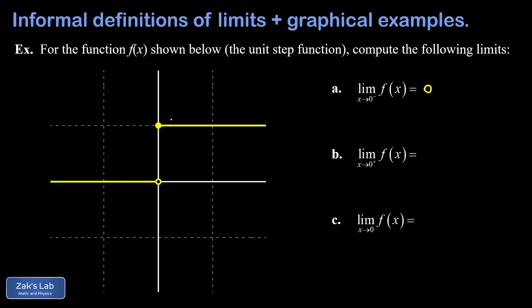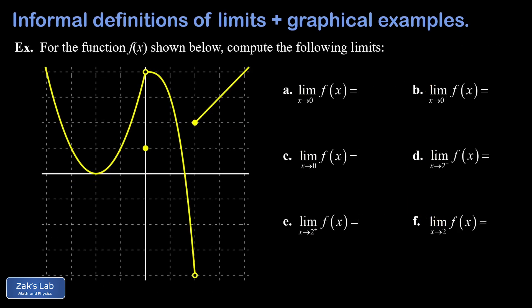The limit as x goes to 0 from the right puts us on the upper branch where f(x) equals 1, so that limit is 1. Because the left and right limits don't agree — 0 versus 1 — the ordinary limit simply does not exist. f(x) isn't approaching one particular value as x approaches 0, so we write DNE (does not exist).